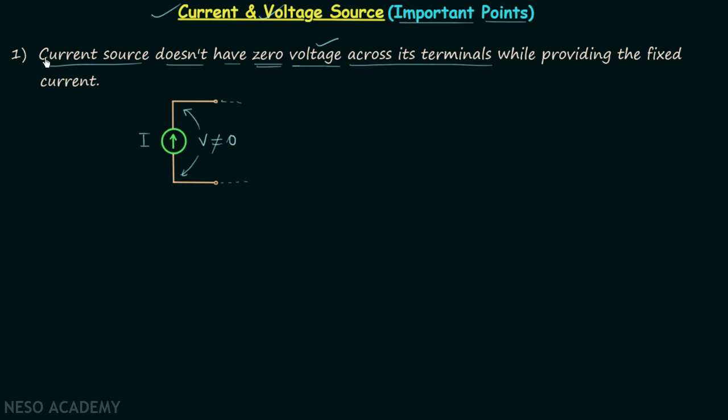So this is all for the first point. Now let's move on to the second point. According to the second point, in the real time system only independent voltage source exists.